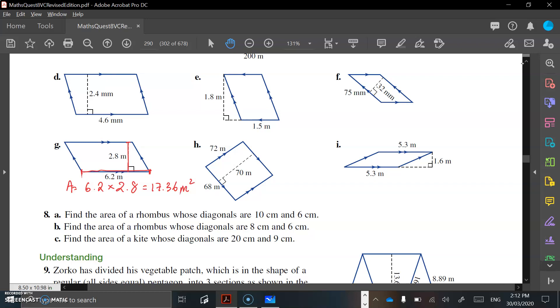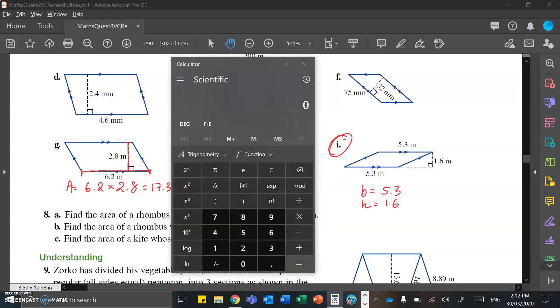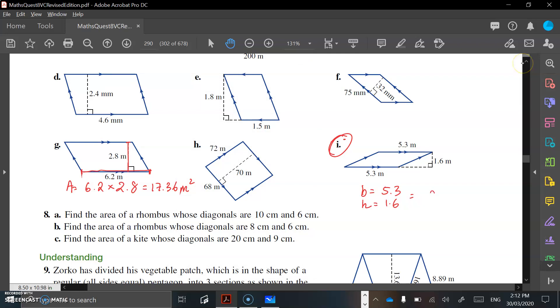We can look at I as our next one, so our base is 5.3, and our height is given as 1.6, so do exactly the same thing. You just multiply those two numbers, 5.3 times 1.6 gives you 8.48 meters squared.